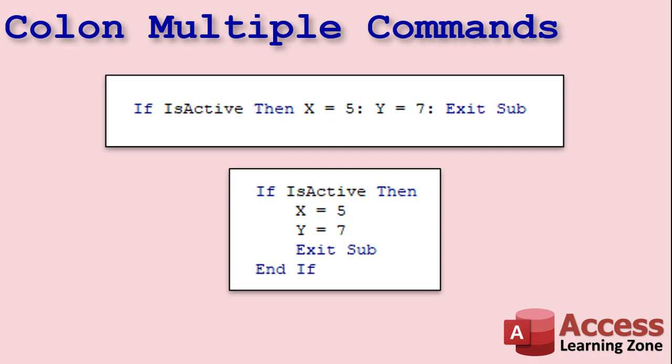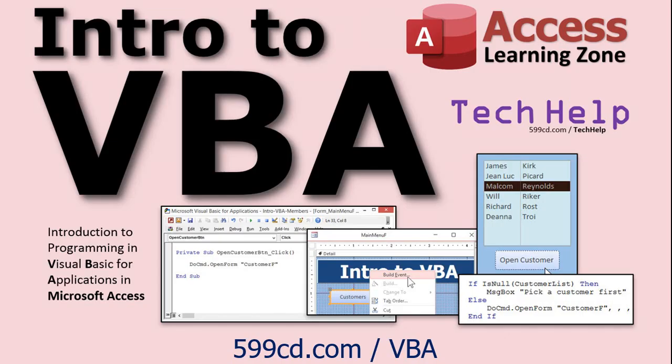Here's another shortcut. I don't personally do this often because I think it makes the code difficult to read, but you might see this on some forums, on some websites, and some books. You can use colons to separate commands. Instead of doing it like this, I think this is better, it's easier to read. But for brevity, if you're trying to keep your code short, this is equivalent to this. So if IsActive, then X equals 5, set Y equal to 7, and then Exit Sub. It's the same as that. I'm just putting that there so you know what it is if you see it. So that's it with the If Then statement.